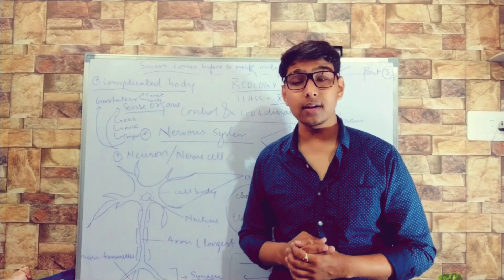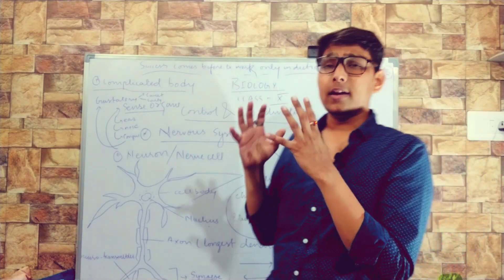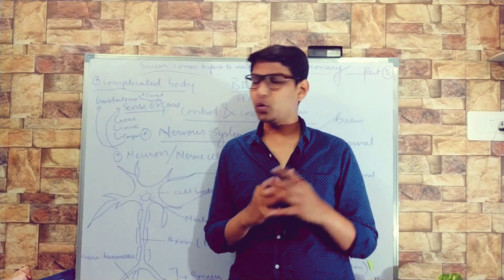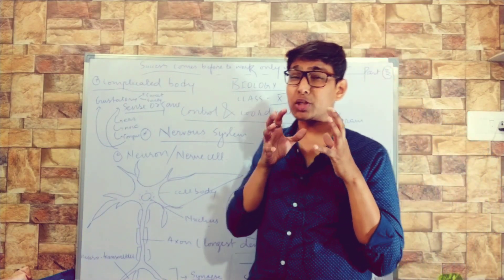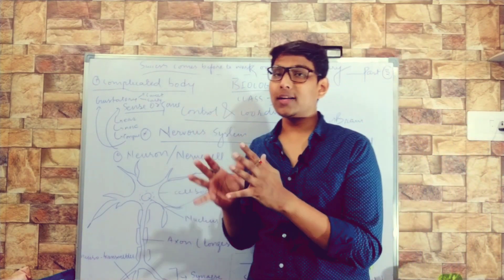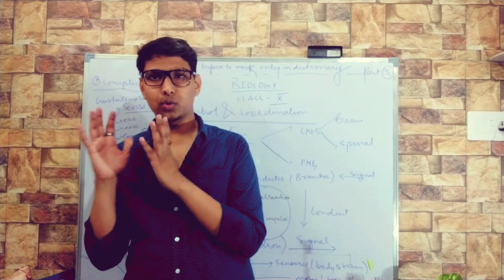When we talk about our tongue, they are having gustatory receptors which sense the sweet and salty behavior of the food. So all these we can sense because of the specialized cell which we call it as nerve cell or the longest cell of the body. Nerve cell, neuron, both are similar things. And the unit of nervous system is neuron.